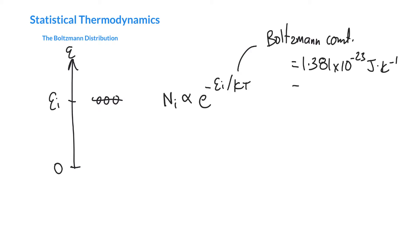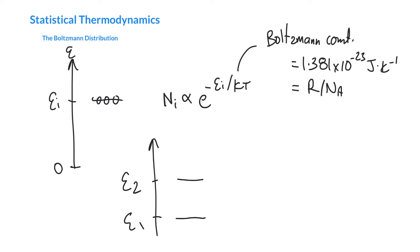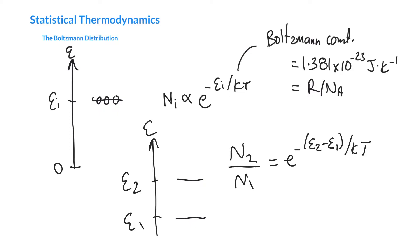The Boltzmann constant equals the gas constant divided by Avogadro's number. If we have two states instead of one and want to know the relative population of state 2 compared to state 1, we can use the same expression. The ratio of state 2 to state 1 is e to the minus the difference in energy — E2 minus E1 — divided by kT.